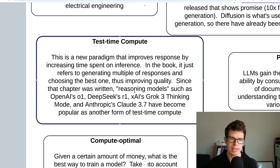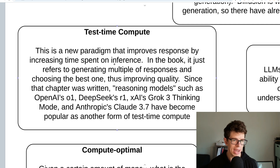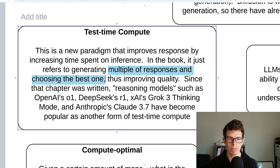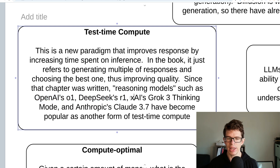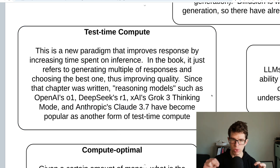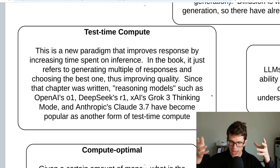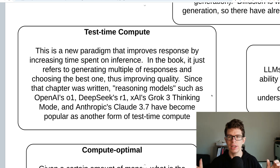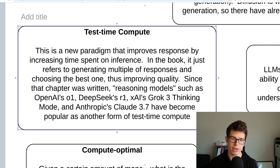You'll also want to know about test time compute. Since this book was released, this has gotten way more important. Reasoning models have gotten really popular — OpenAI's o1, DeepSeek's R1, XAI's Grok 3 Thinking, Anthropic's Claude 3.7 — those all use test time compute. They have a thinking mode where it generates a bunch of tokens, just like you thinking in your head, and then after it has a plan for the response, it creates the response. For the ones that let you see the thinking, it's really interesting — it will sometimes say something and then backtrack and follow a different line of thought.